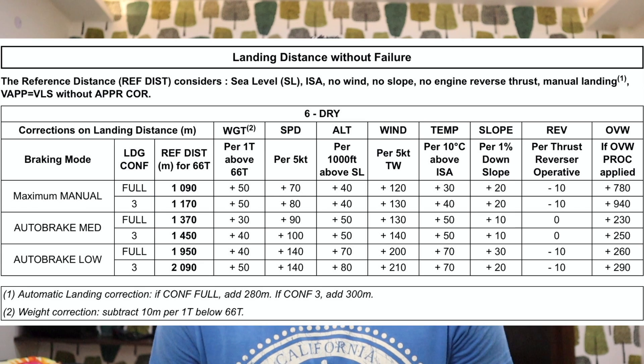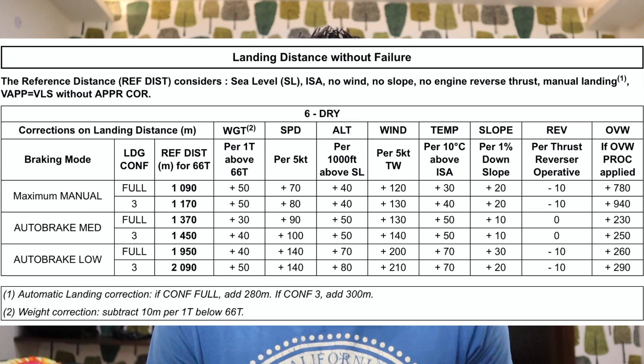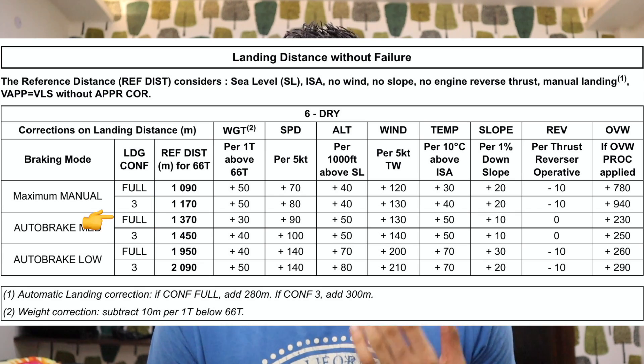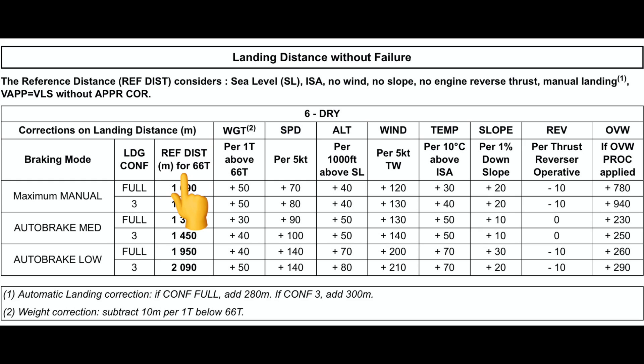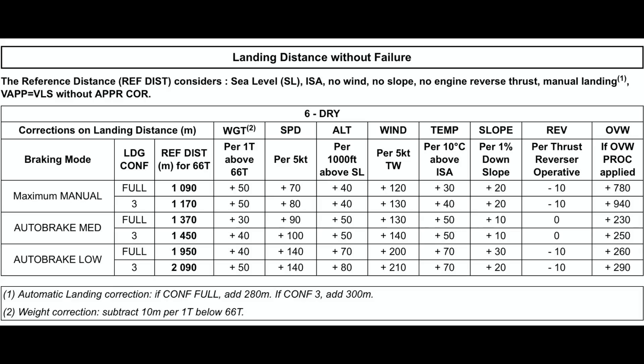The next column states the landing configuration, which is the topic of our discussion today. As you can see, it states full and 3 — the two possible landing flap configurations on the Airbus A320. In the next table, we have the reference distance in meters — this is how much distance is required to stop the aircraft on the runway.